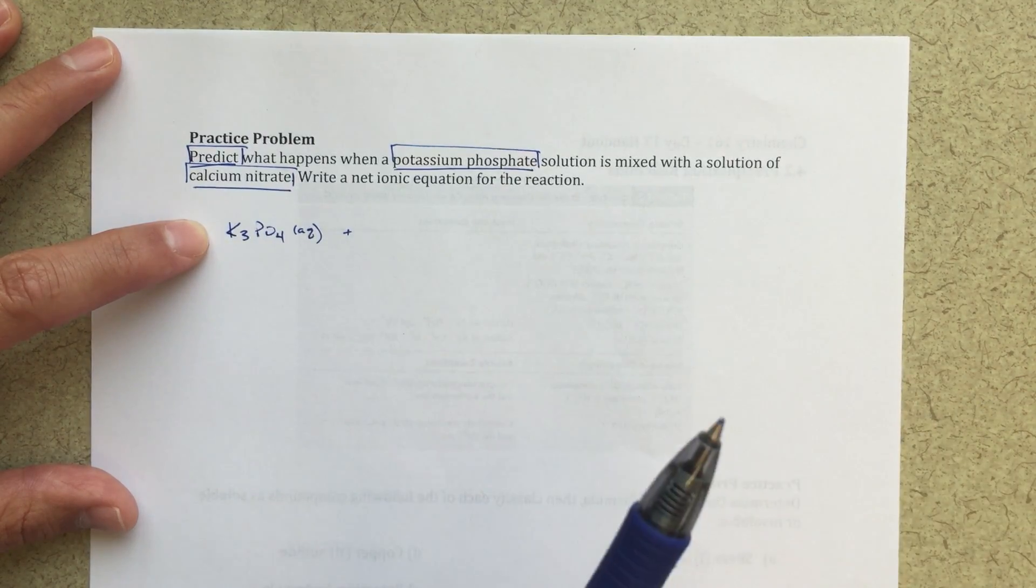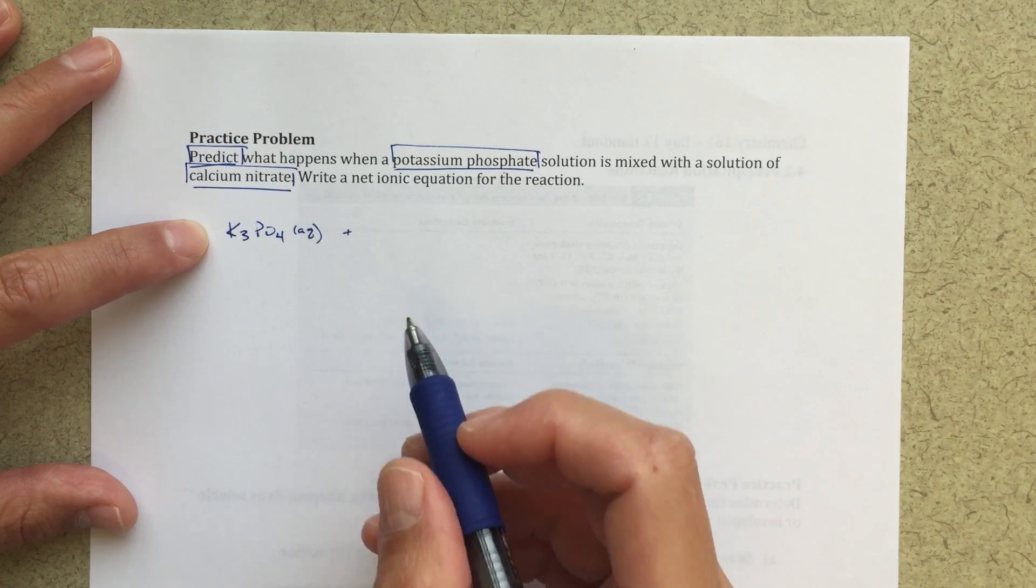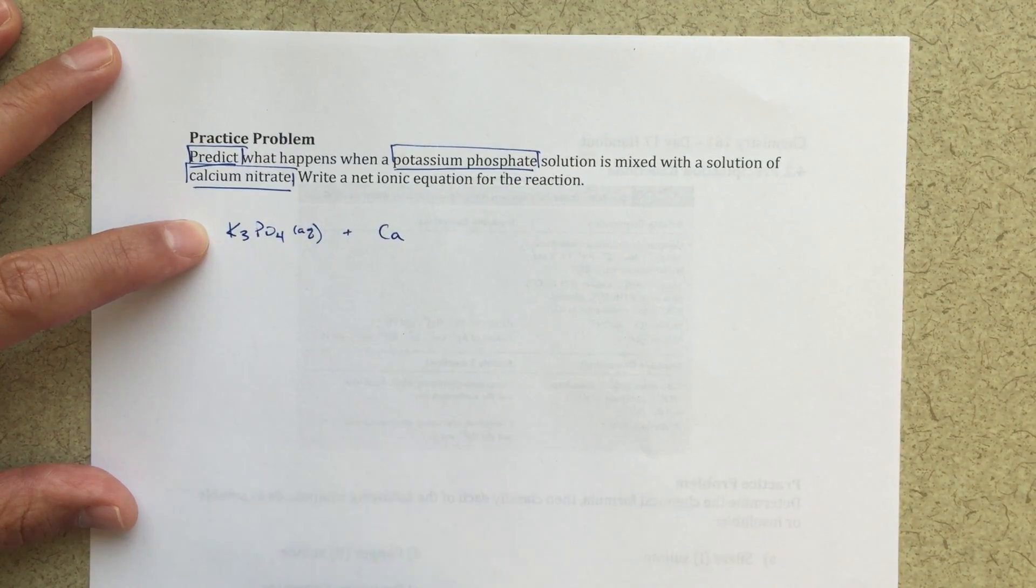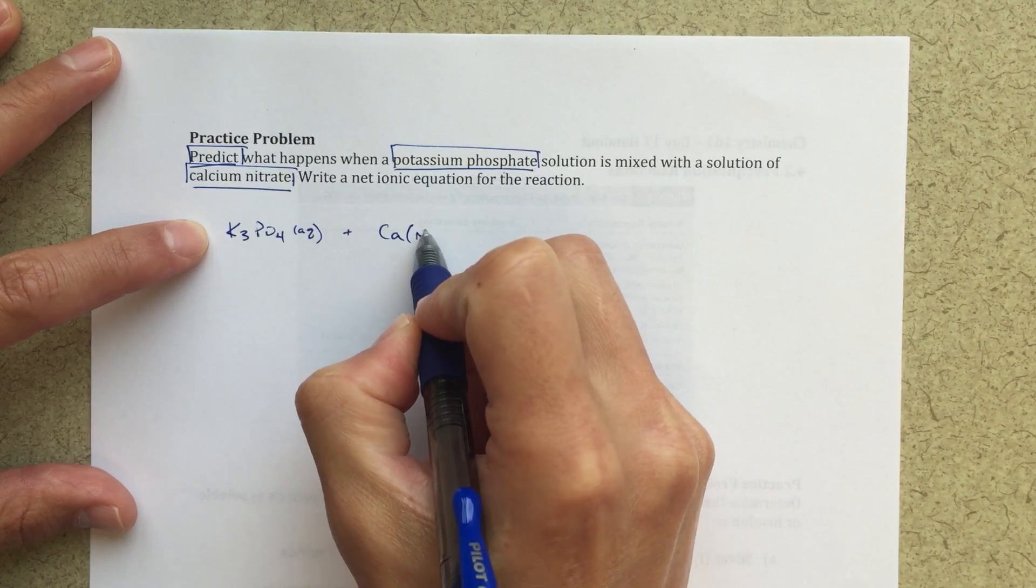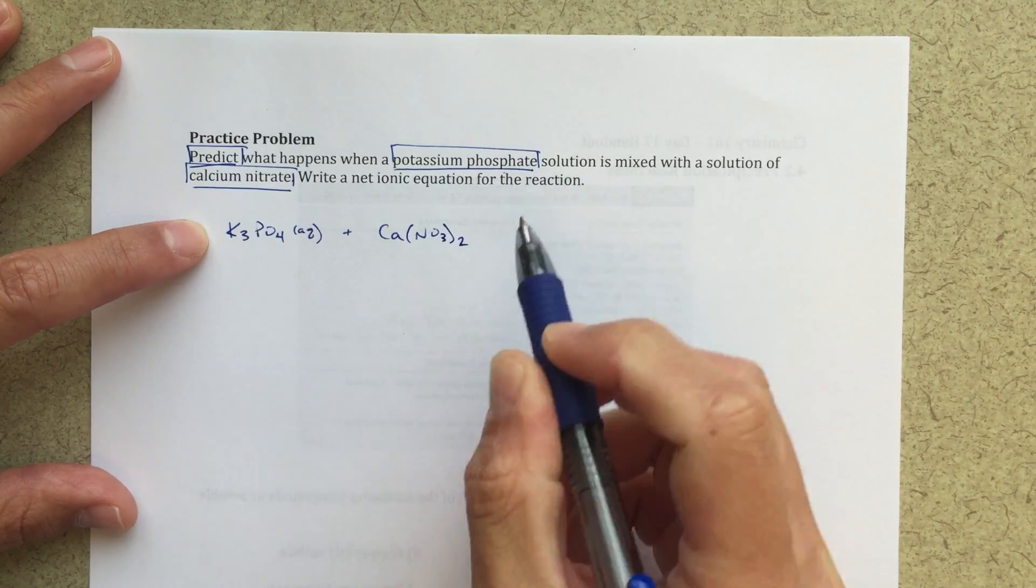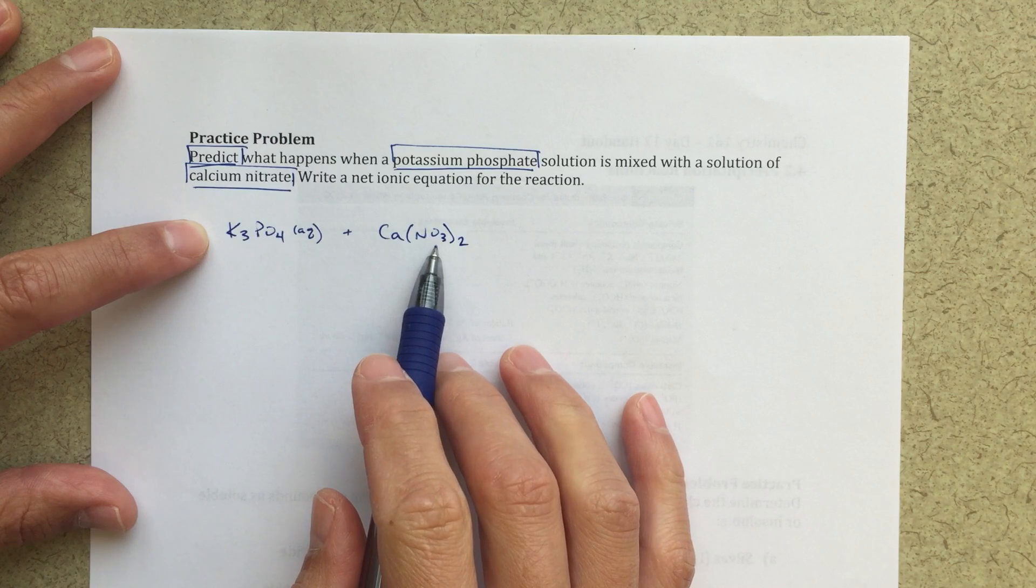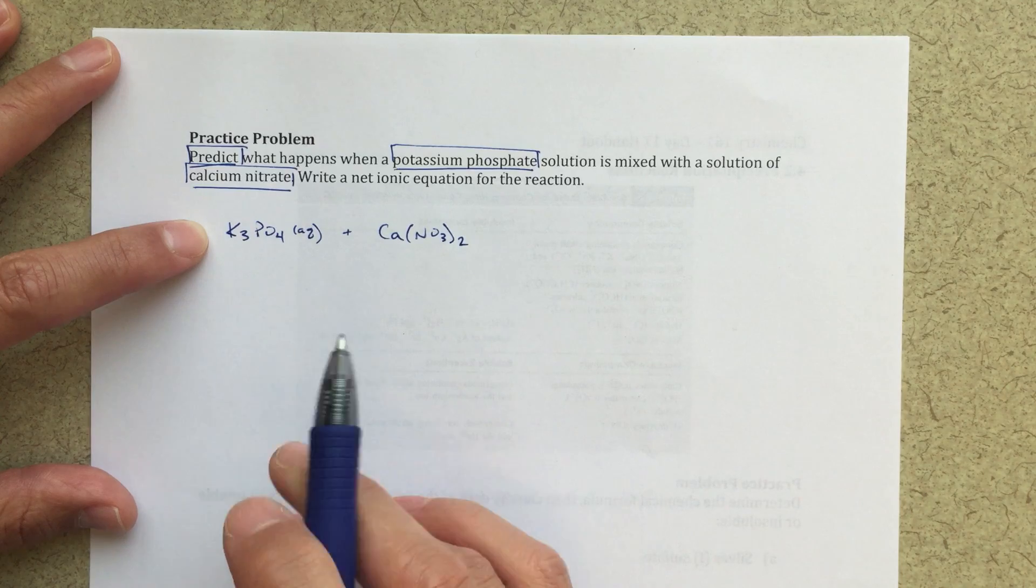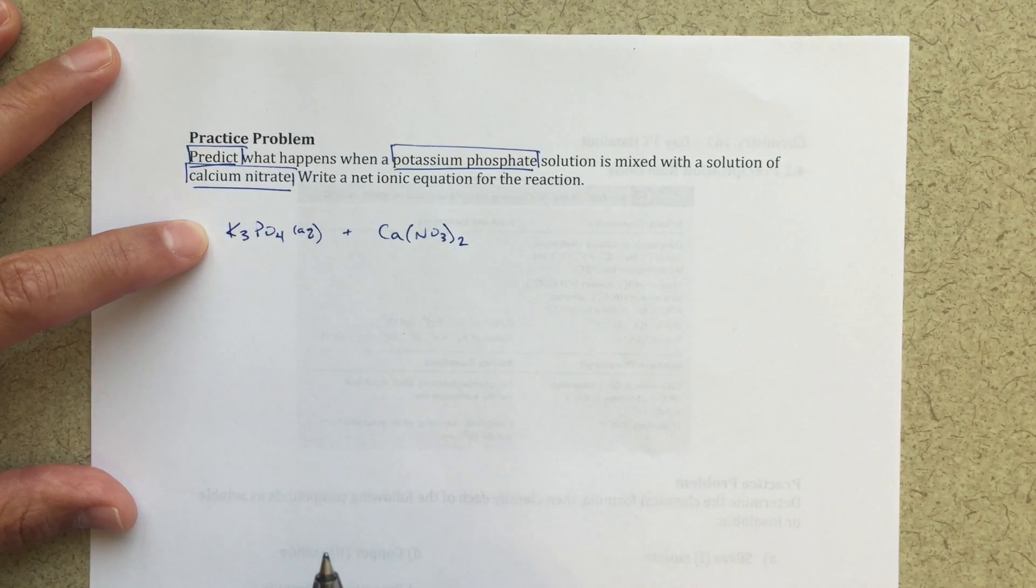So I'm going to need three of these potassium ions for every one of these PO4 polyatomic anions to form my balanced molecular compound. So calcium nitrate, I know that calcium is going to have a two plus charge, and then my NO3, so nitrate is NO3, it has a minus one charge. So I'm going to need two of those NO3s for every one of those calcium two plus cations that I have.